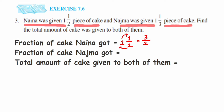The fraction of cake Najima got is one and one-third. We're going to convert this into an improper fraction as well. Three ones are three, three plus one is four, so we get four upon three.